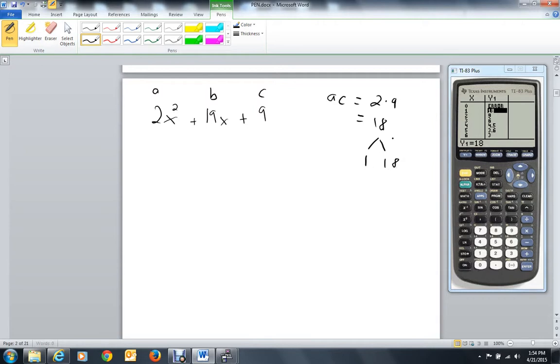That means I'm going to use 1 and 18 because 1 times 18 is 18 and 1 plus 18 is 19. If I add them together and put the x's in, you'll see the way I get the 19x that I'm going to use. So rather than 19x, I'm going to use 1x plus 18x.